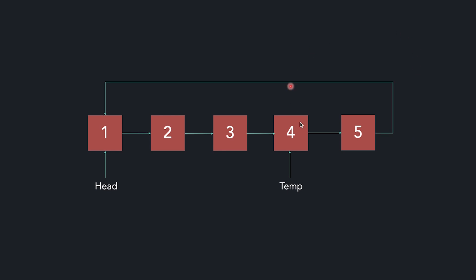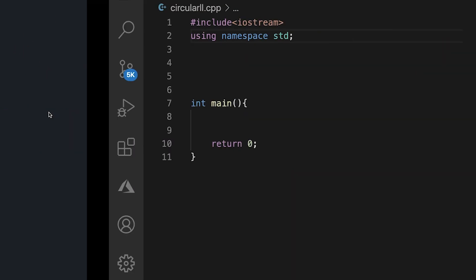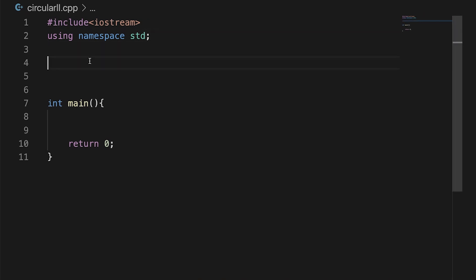After linking the previous last node to the new node, I have to set the new node's next to the head pointer. Because after adding the last node, it should point to the head node to maintain the circular structure. Now let's code it.